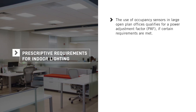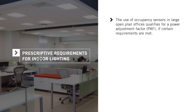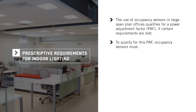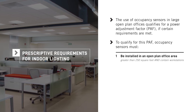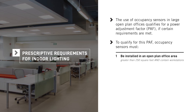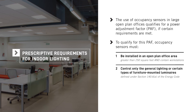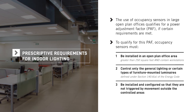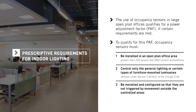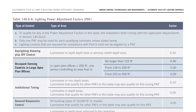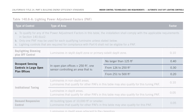Second, the use of occupancy sensors in large open plan offices qualifies for a power adjustment factor (PAF) if certain requirements are met. To qualify, occupancy sensors must be installed in an open plan office area greater than 250 square feet that contains workstations, control only the general lighting or certain types of furniture-mounted luminaires defined under Section 140.6-A, and be installed and configured so they are not triggered by movement outside the controlled areas. When all these conditions are met, the system qualifies for a PAF between 0.2 and 0.4, depending on the size of the occupancy sensor control zone per Table 140.6-A.